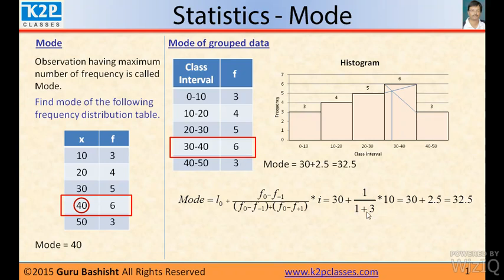So 1 by 4 into 10, 30 plus 2.5, this is 32.5. So mode of this group data is 32.5.